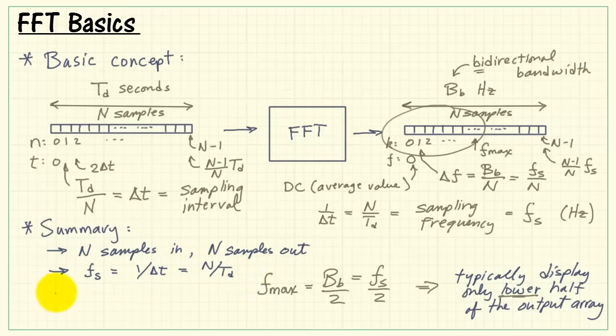We can write that a couple different ways. The spacing of the frequency bins in our spectrum is the sampling frequency divided by n.